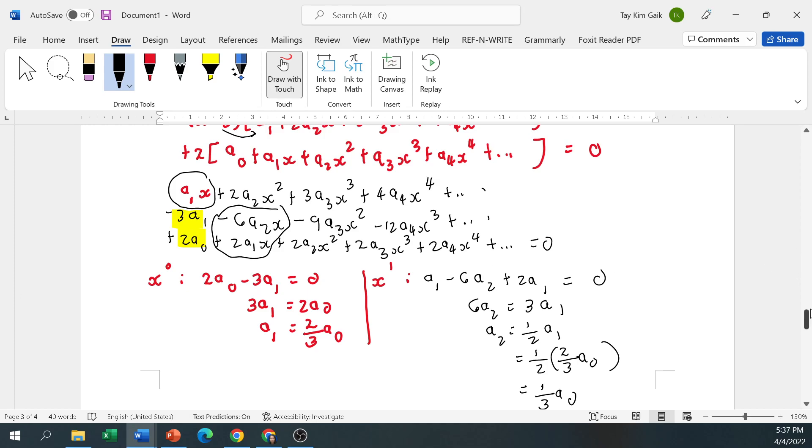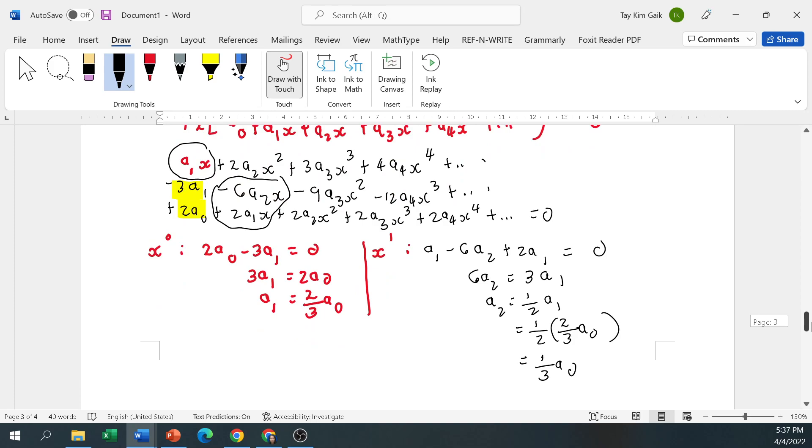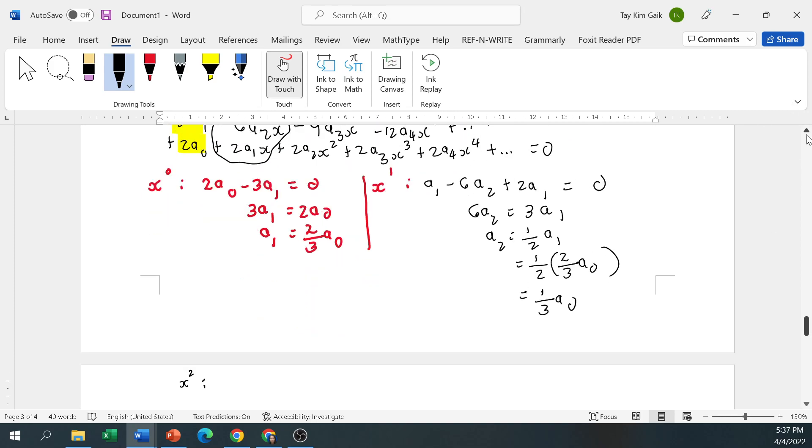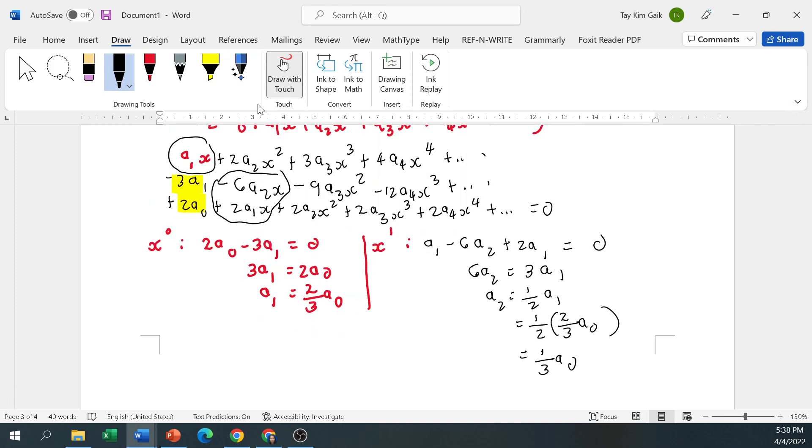For x squared term, you see the following. Got here 2a2. 4a2 equal to 9. 4a2 minus 9a3 equal to 0, or 4a2 equal to 9a3.